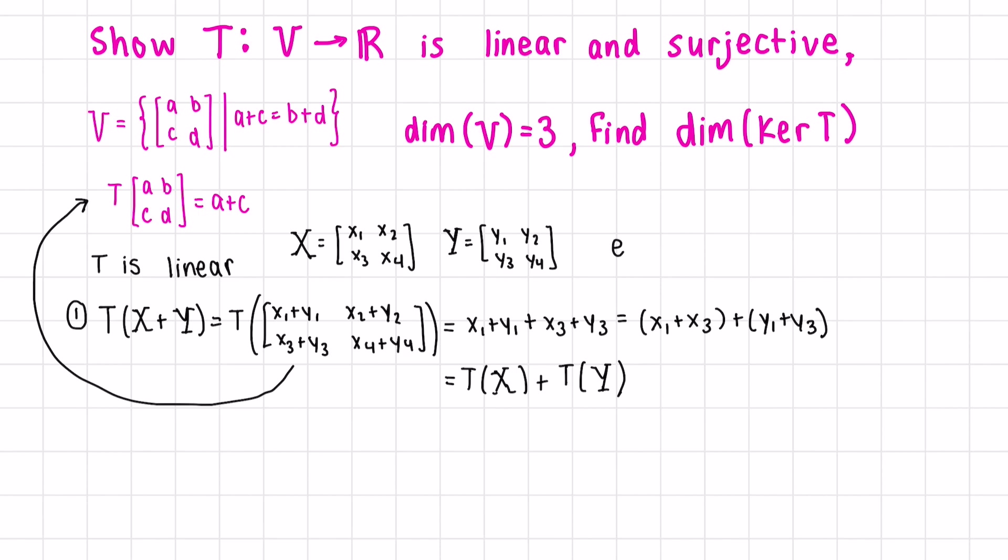Next, let's define a scalar, say C, in order to check closedness under scalar multiplication. This is the same as C·X1 plus C·X3, which we can factor out the C from both terms and rewrite as C times the transformed version of X. Thus, our transformation is linear.